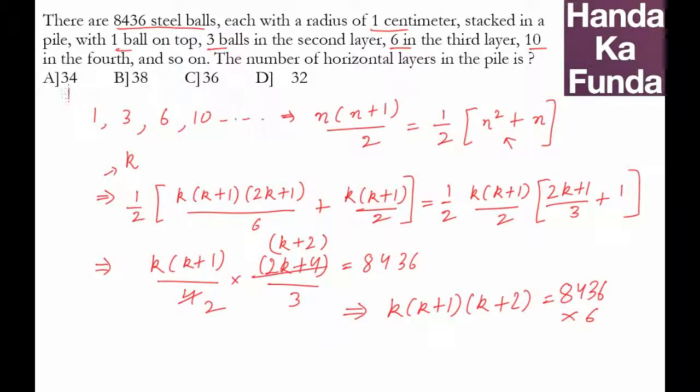If k is 34, then k+1 is 35. 34 × 35 cannot end in a 6, but this number ends in a 6. Similarly, 38 × 39 × 40 will end in 0, not 6. And 32 × 33 × 34 will end in 4, not 6.